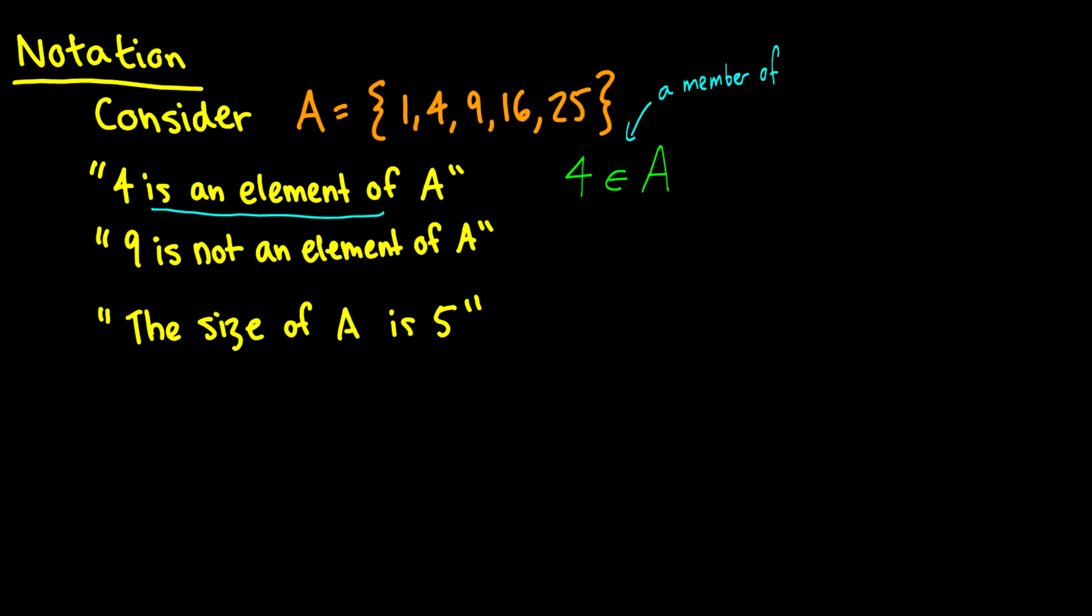Now when we want to say something is not in the set, we can write 9, and then we just put a cross through it, and that means that it's not an element of the set. Of course in this case it actually is a member of the set.